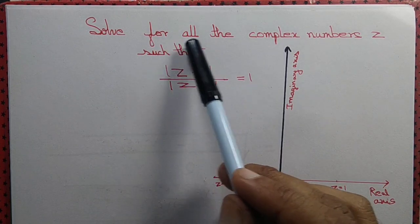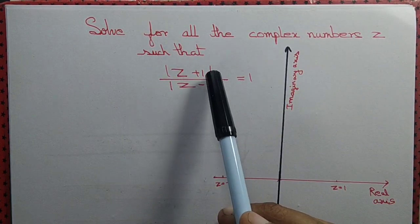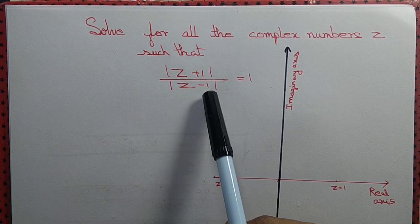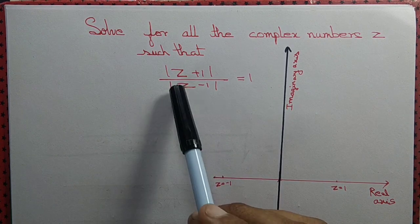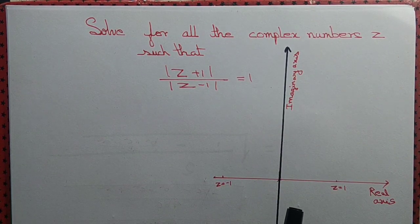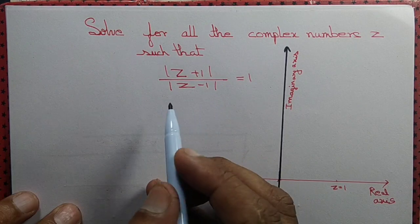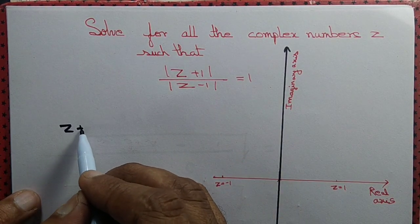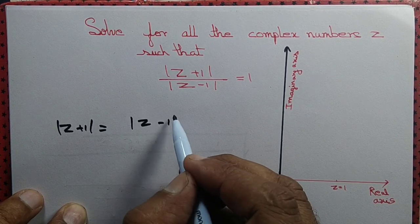Let us solve for all complex numbers z such that modulus of z plus 1 divided by modulus of z minus 1 equals 1. We can write z equal to x plus iy and solve directly, but there is an easier method. We rewrite this equation as modulus of z plus 1 equal to modulus of z minus 1.